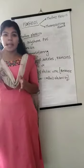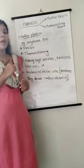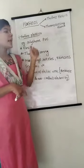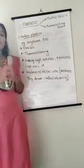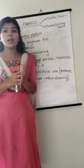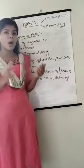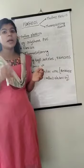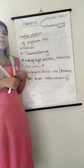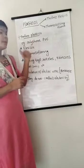Now we are going to discuss about the different types of plastics. There are two types: thermoplastics and thermosetting plastics. Thermoplastics can be softened repeatedly on heating and can be molded into different shapes again and again. They are flexible and can be bent very easily without breaking. Examples of thermoplastics are polythene and PVC.